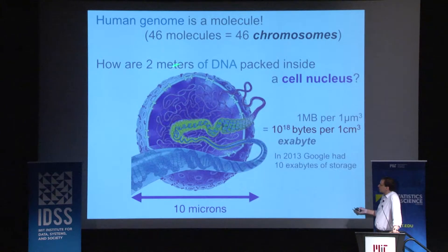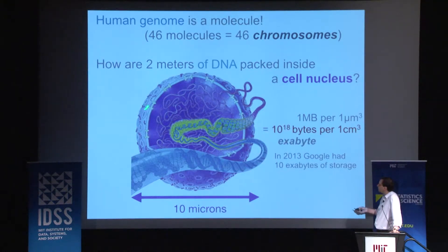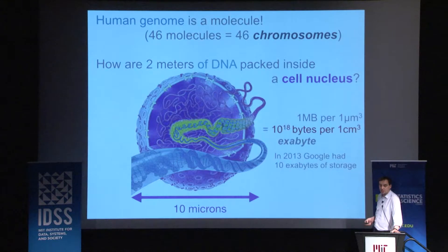An interesting side note: the density of information inside a nucleus is about one megabase per cubic micron. If you fill one cubic centimeter with nuclei of cells, that gives you exactly an exabyte in one cubic centimeter — basically in a memory stick. Just to give an idea about exabytes: in 2013, Google had only 10 exabytes. In principle, this can be stored in that much DNA.